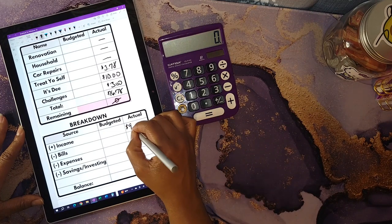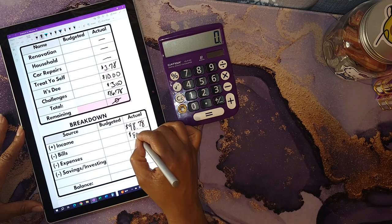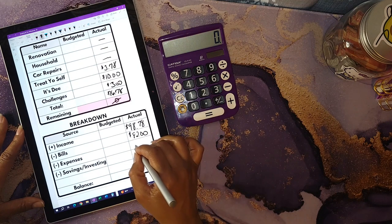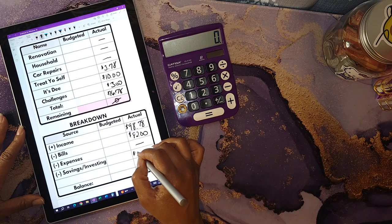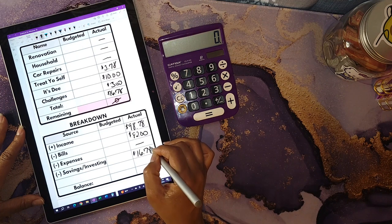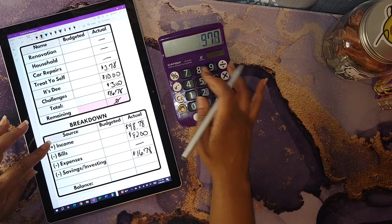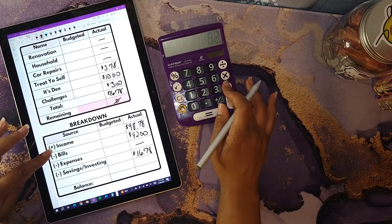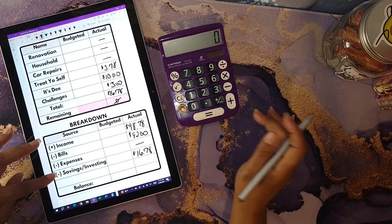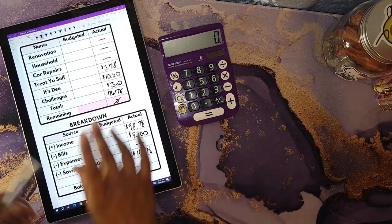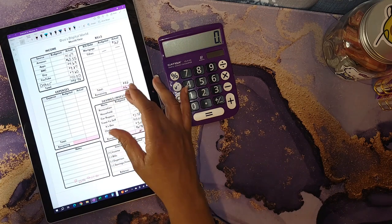My income was a total of $98.78. The total bills were $82. I did not have any expenses, and my savings and investing section came up to a total of $16.78. I'm going to take my income, which was $98.78, minus $82, minus $16.78 for my savings and investing, and that becomes zero. That is my zero-based budget.